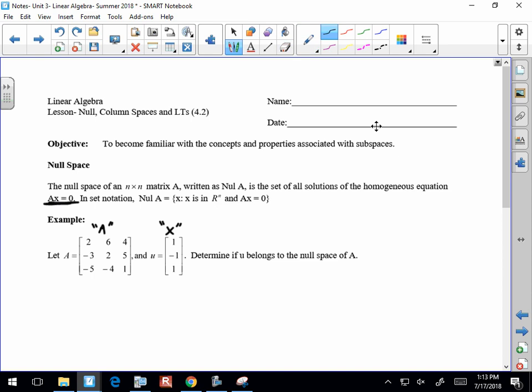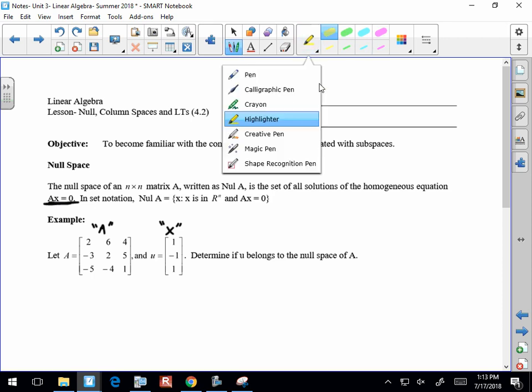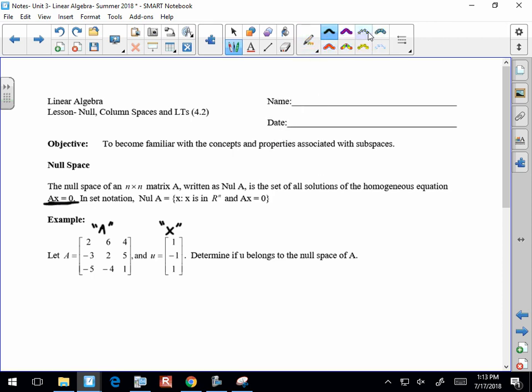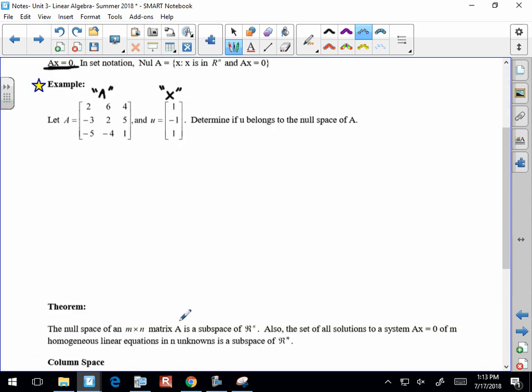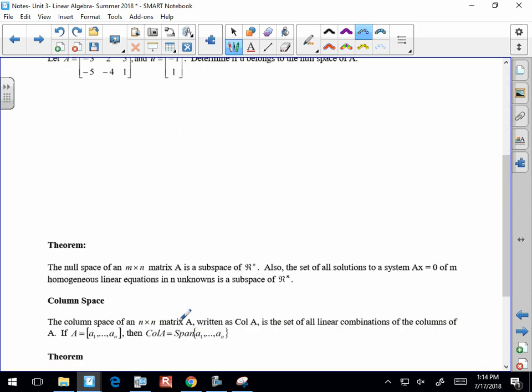All right, so really it's just a matter of multiplying the two things. Pop them in your calculator and see if it gives you the zero vector. If it does, then you have yourself a null space. If it doesn't, then you don't have yourself a null space.